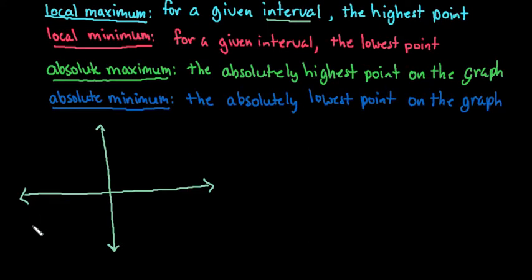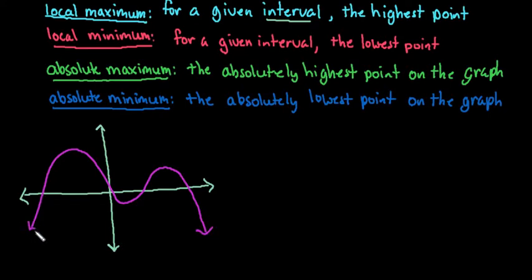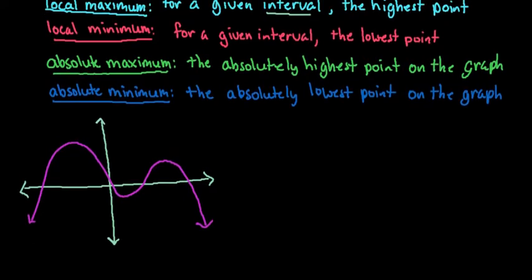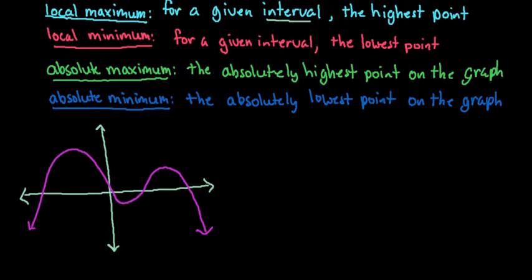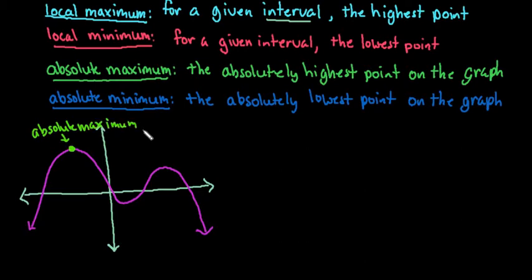Let me draw one that has a couple of different points. I'm going to have a high point, a low point, another high point, and then it's just going to go forever to infinity. With this, we would look at all of these points. Right here at this point, we have the highest point — there's no point higher than this point on the graph. So this would be called an absolute maximum. It is absolutely the highest point on this graph.